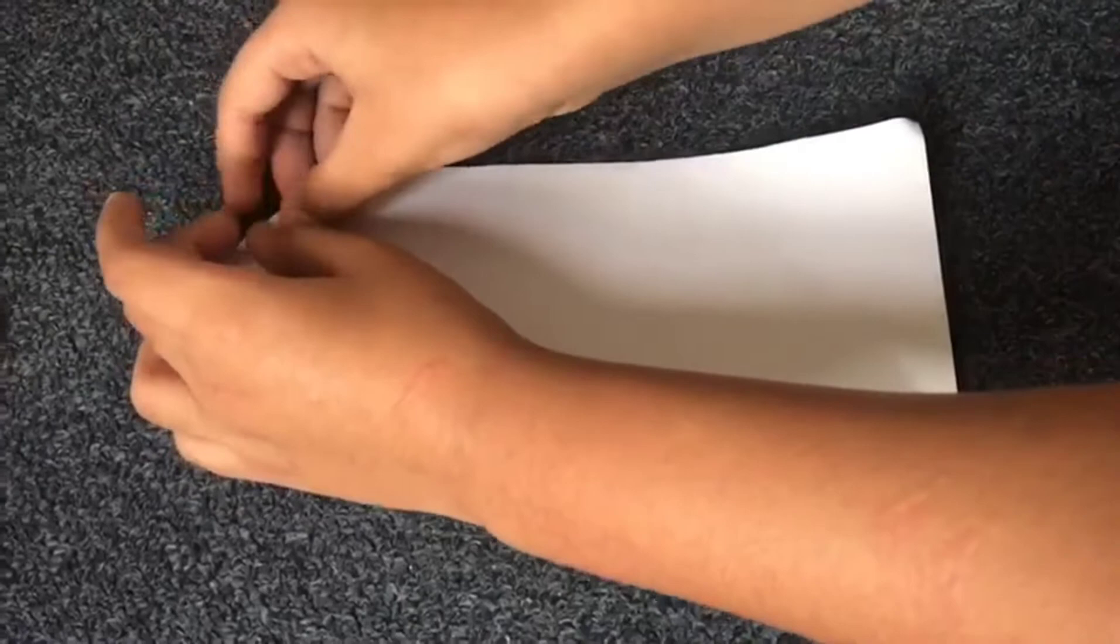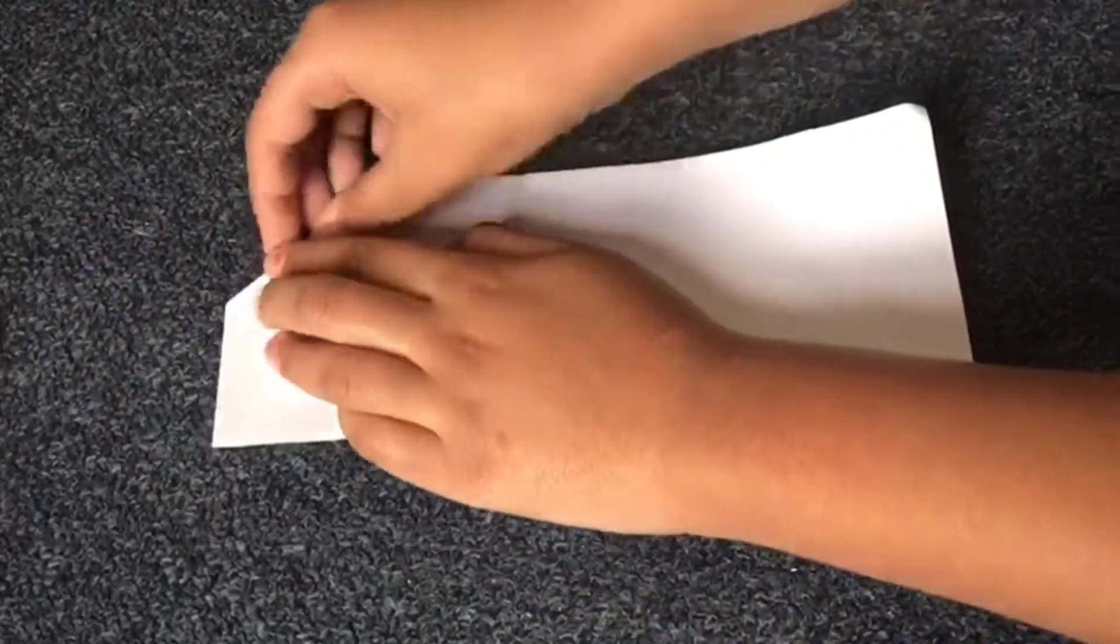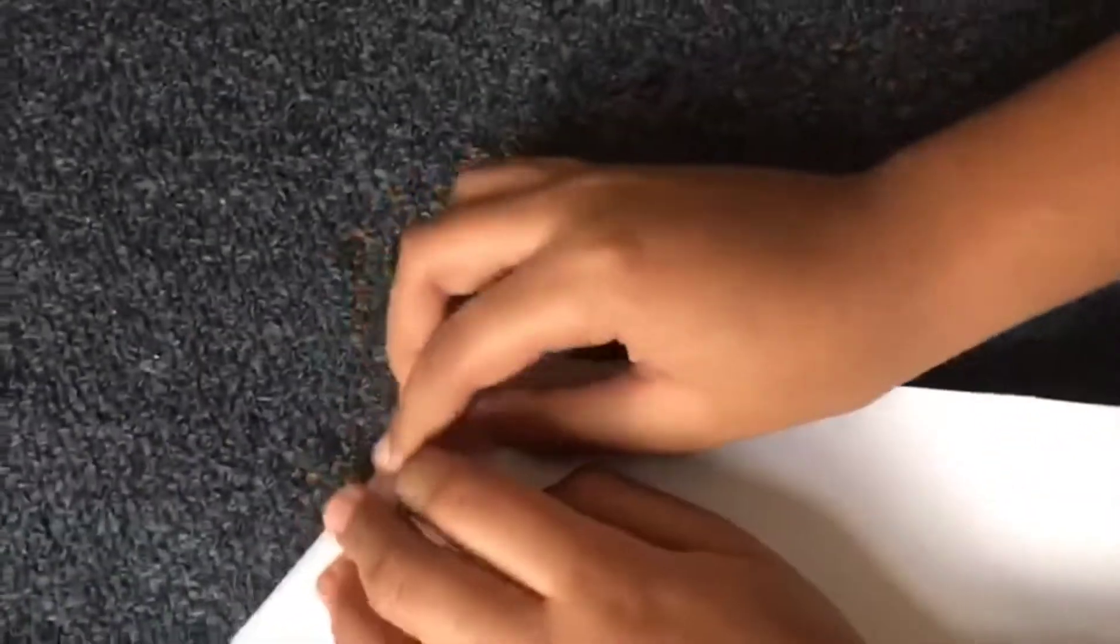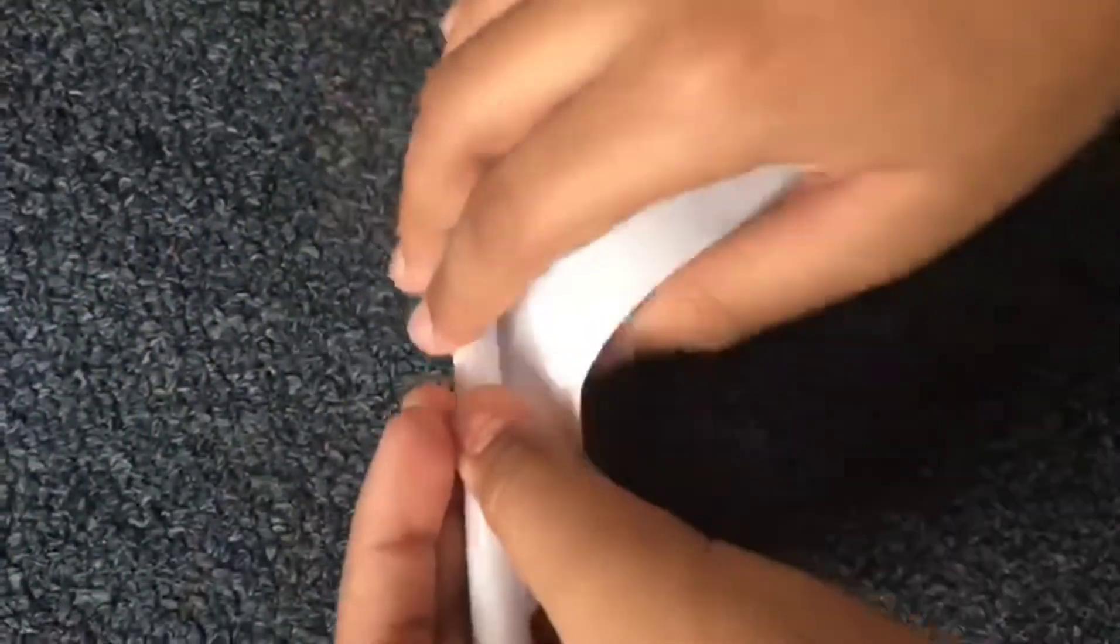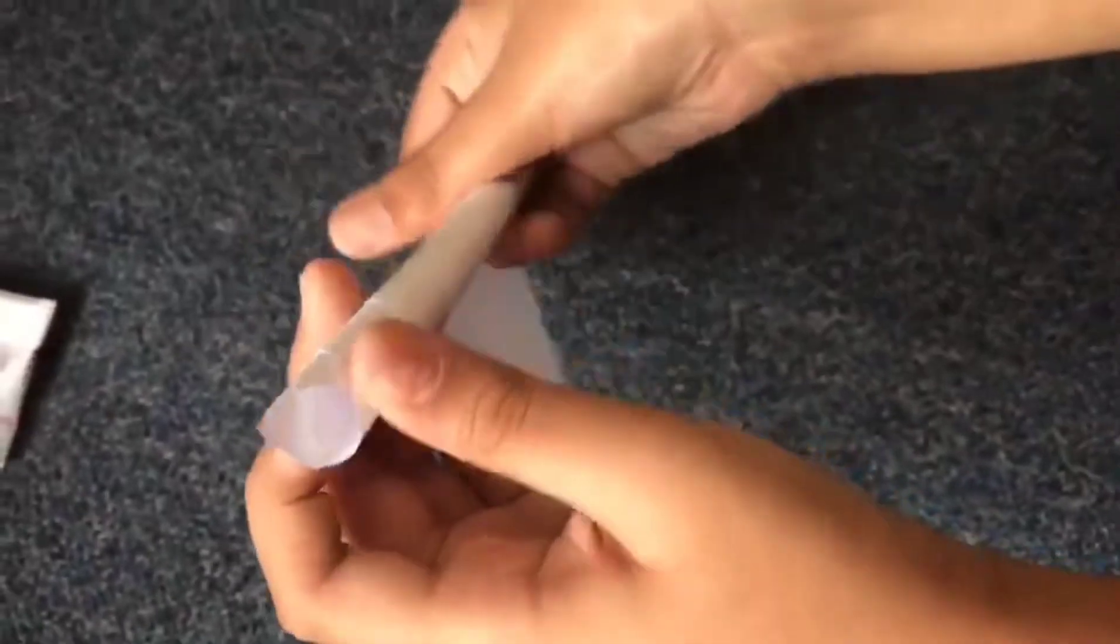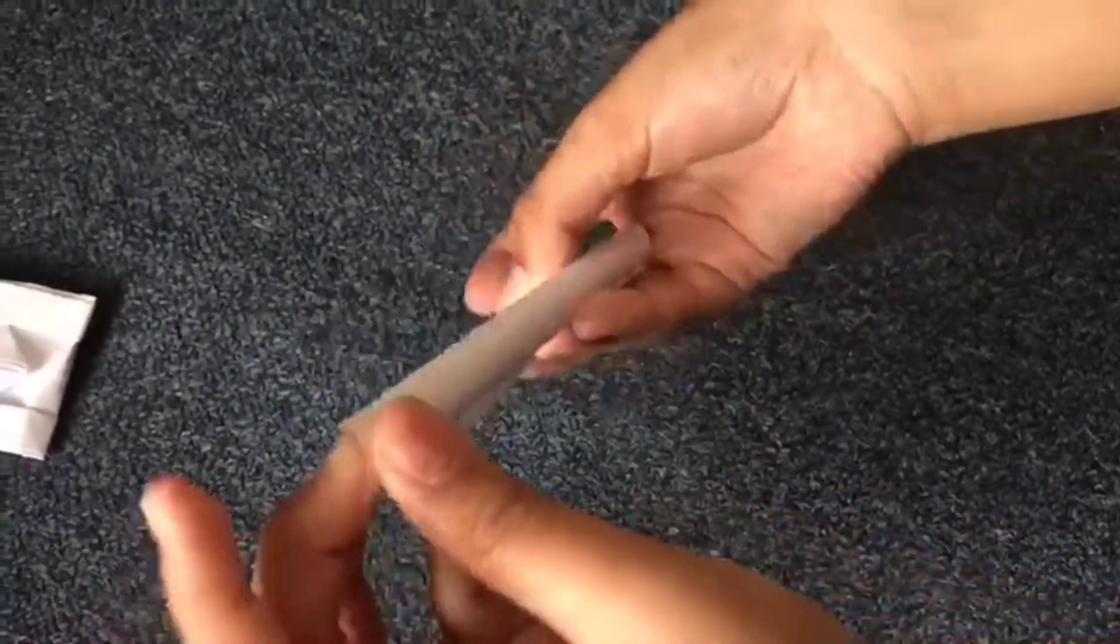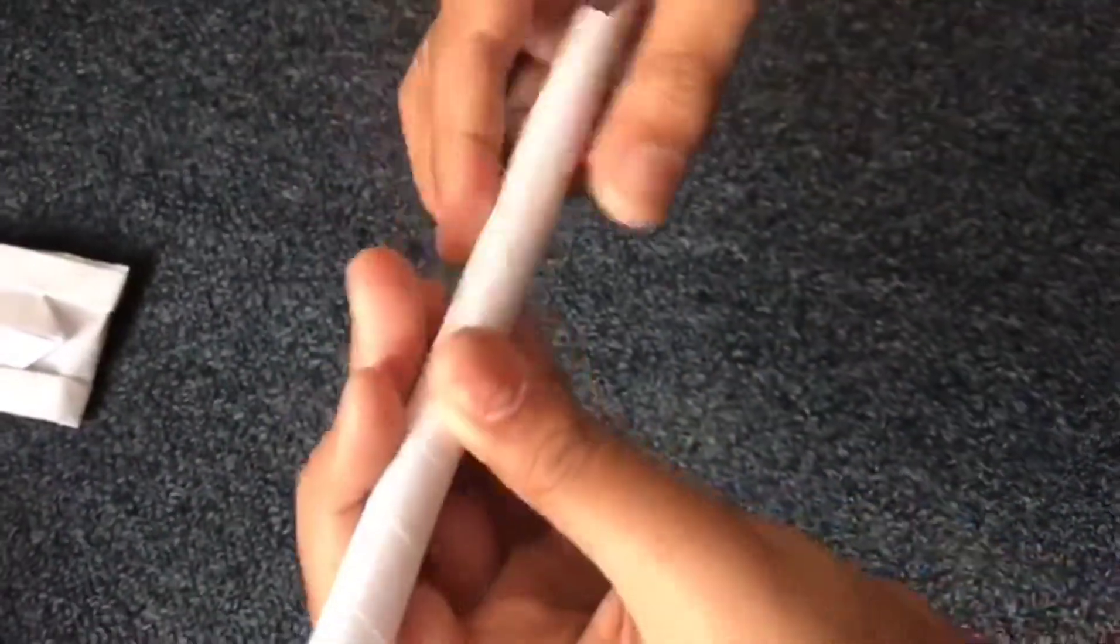Now the other tail part which we had we are going to use that roll it. Roll it completely till the end and this we will insert inside the tank.